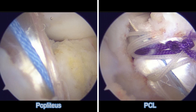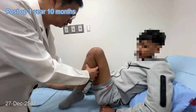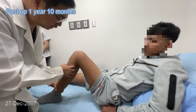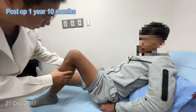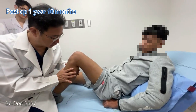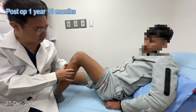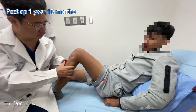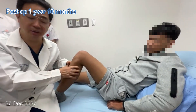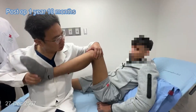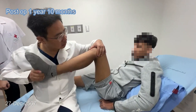Here is the final look of our fixation. Here is the patient on follow-up after 1 year and 10 months. Posterior drawer test is stable and the external rotation is comparable to his normal side.